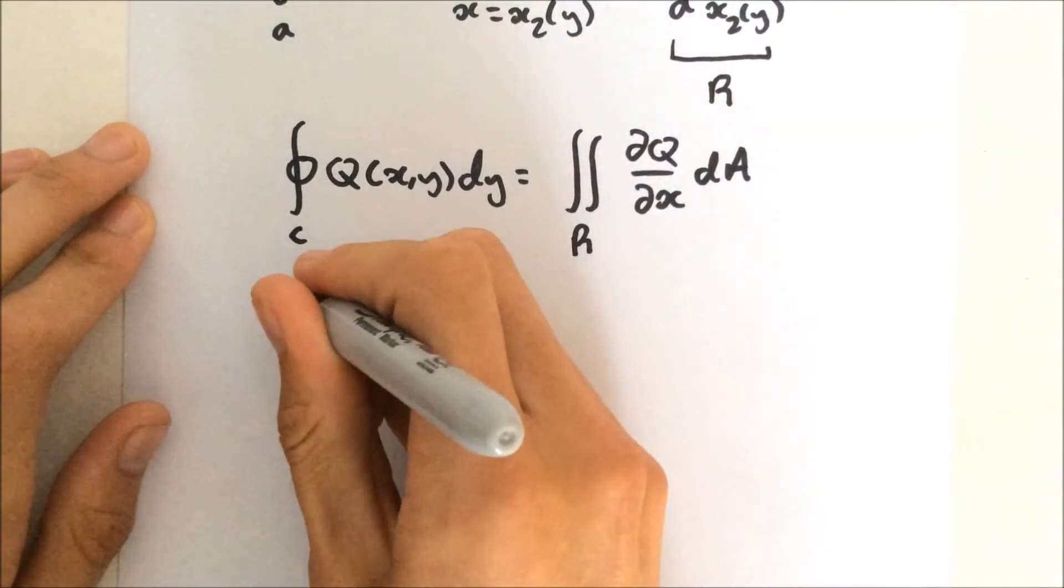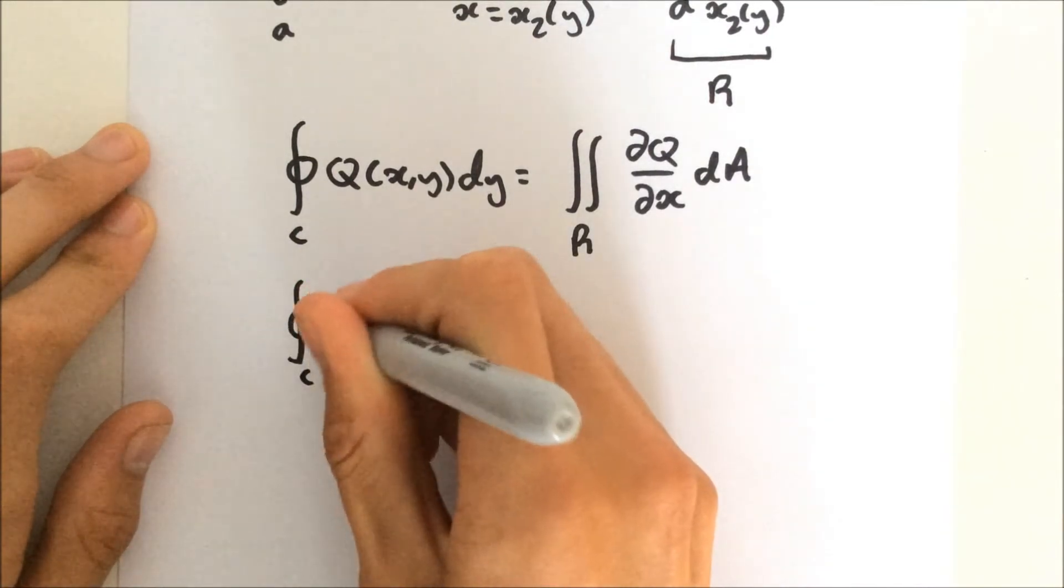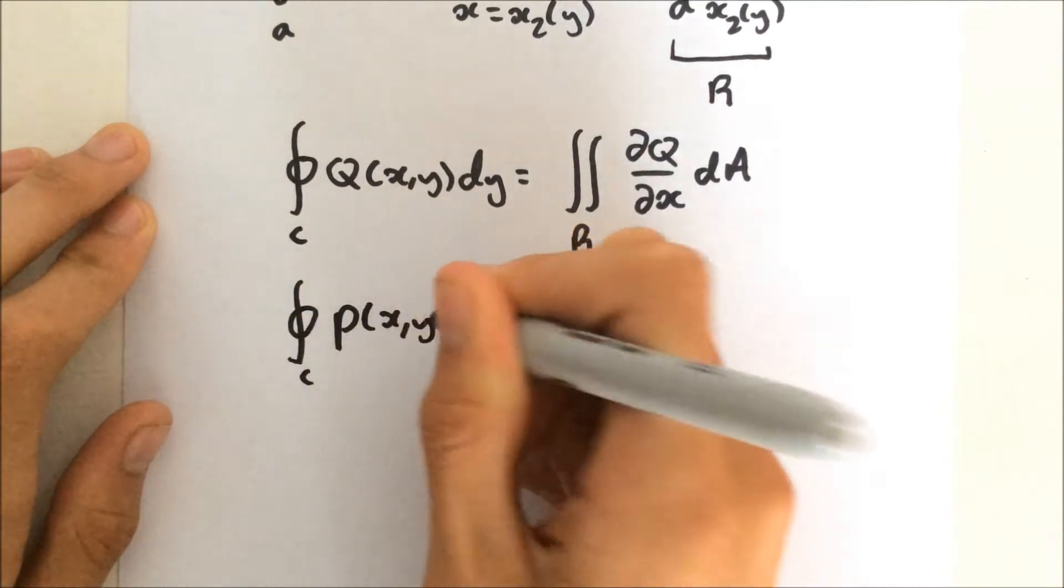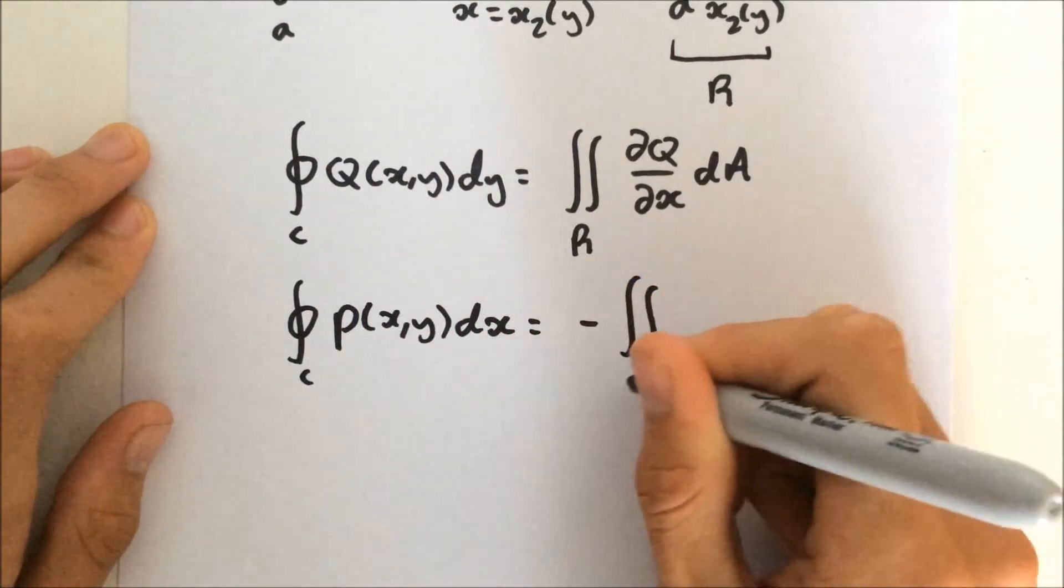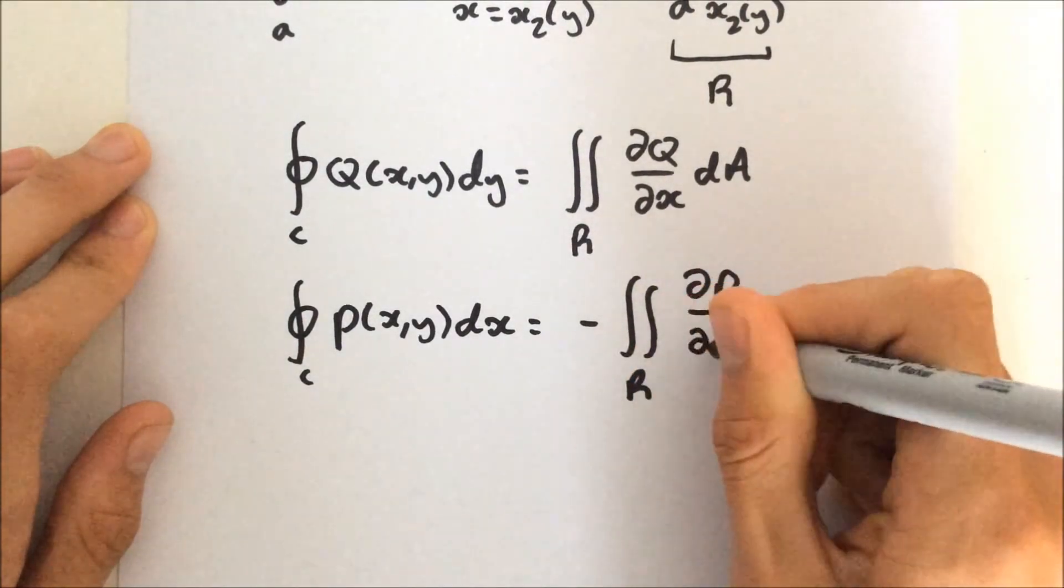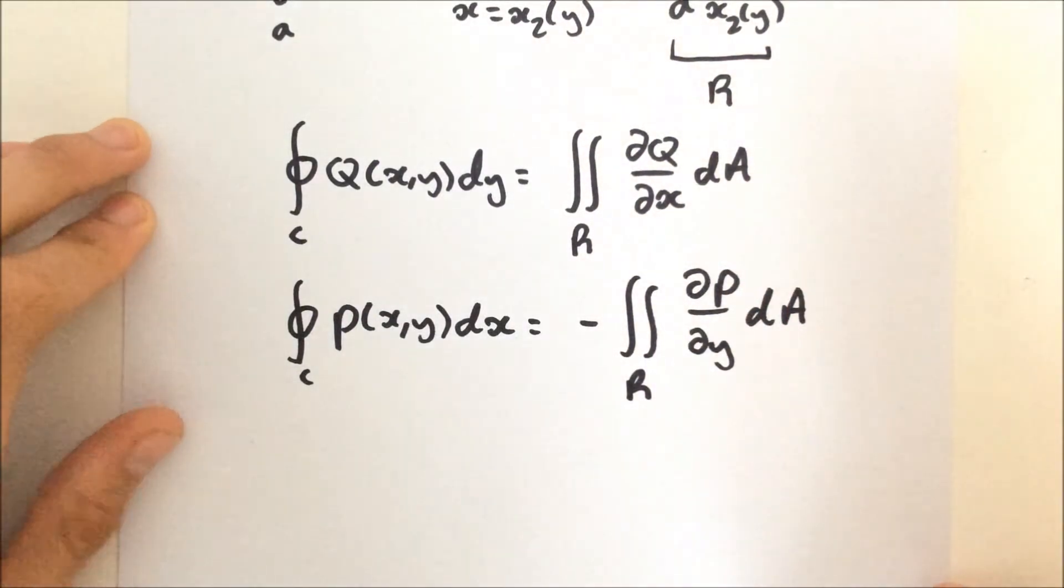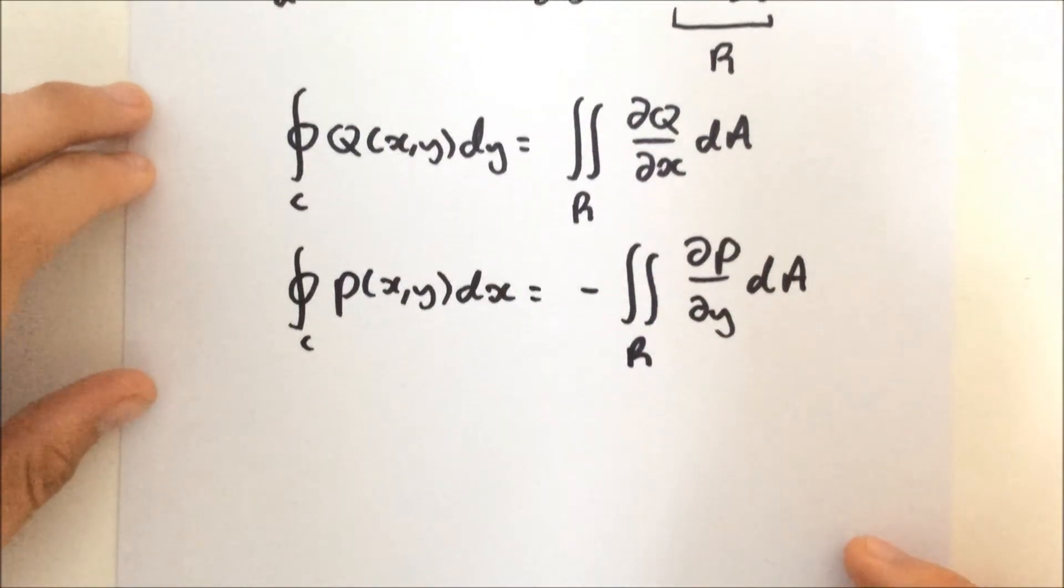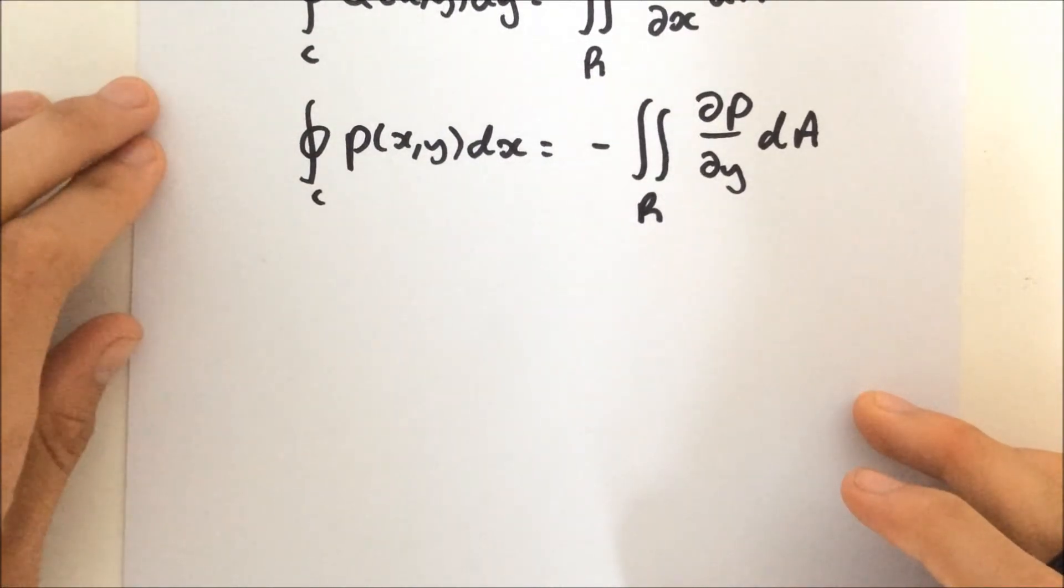And so I'll remind you what we got last time in the previous video. That was with the vector field P. So P xy, and that was dx, but it was equal to minus the double integral over the region R dP/dy dA.